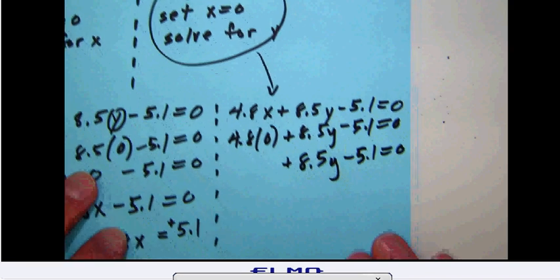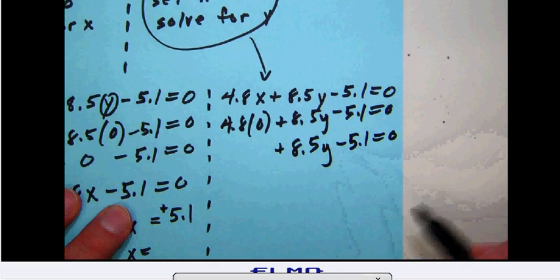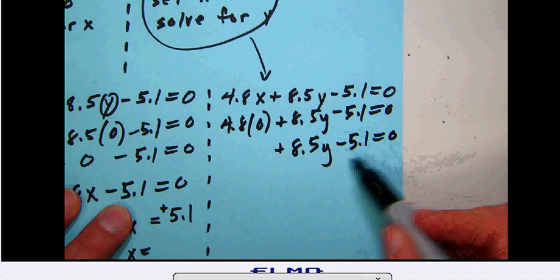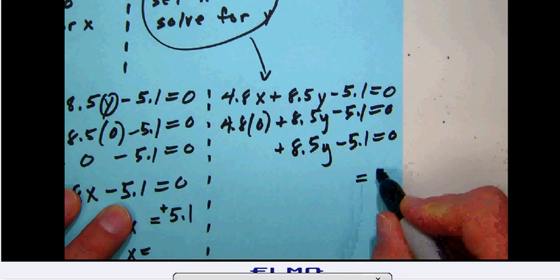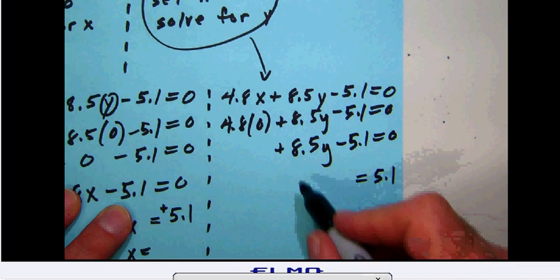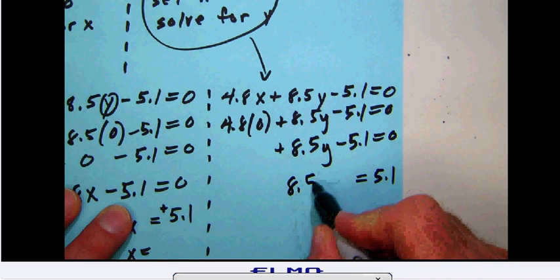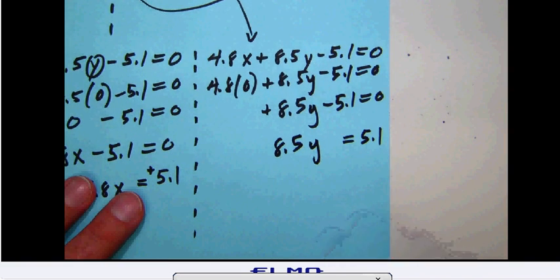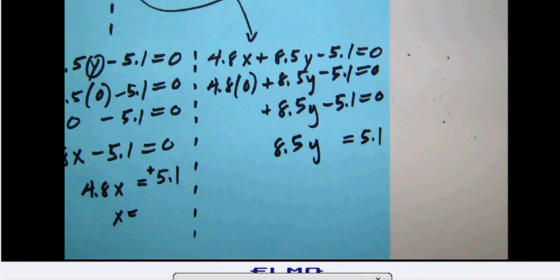Now again, I want to get the y by itself. I've got to get rid of the 5.1 first. It's negative, so change sides, change signs. That's going to give me a positive 5.1 equals 8.5y. I want to get the y by itself now. I have to get rid of the 8.5, so what I'm going to need to do is take the 5.1 and divide by 8.5.